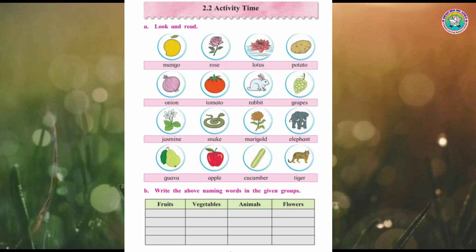Snake - S-N-A-K-E. Snake is an animal, so write it in the third box. Marigold - M-A-R-I-G-O-L-D. Marigold is a flower, so write it in the last flower box. Elephant - E-L-E-P-H-A-N-T. Elephant is an animal, third box.